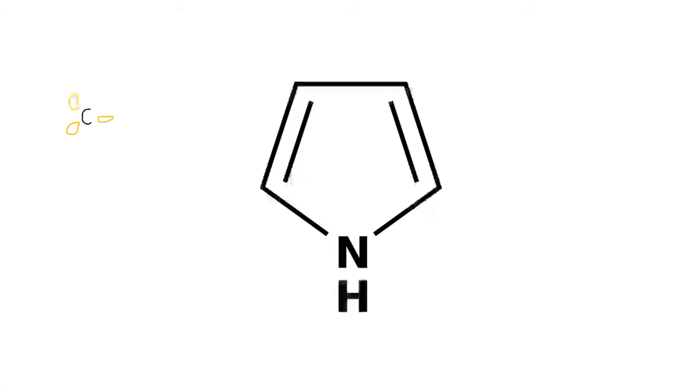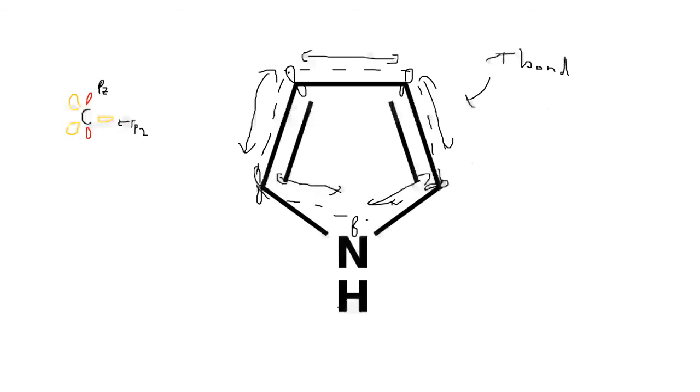All the carbons and the nitrogen that make up the ring are sp2 hybridized. This allows for a delocalized pi bonding system in Pyrrole as all the p orbitals overlap and this is what makes the molecule interesting.